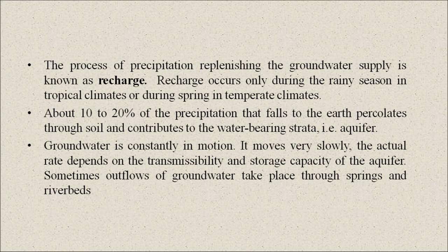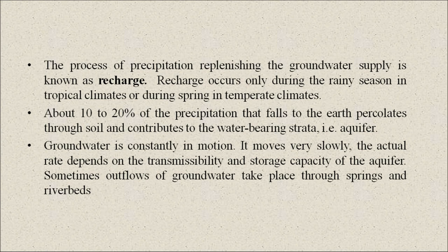The process by which precipitation replenishes the groundwater supply is known as recharge. Recharge occurs only during the rainy season in tropical climates, or during spring season in temperate climates. About 10 to 20 percent of the precipitation that falls to the earth percolates through soil and contributes to the water-bearing strata, that is, the aquifer. Groundwater is constantly in motion, though it moves very slowly. The actual rate depends on the transmissibility and storage capacity of the aquifer. Sometimes outflows of water take place through springs and river beds.